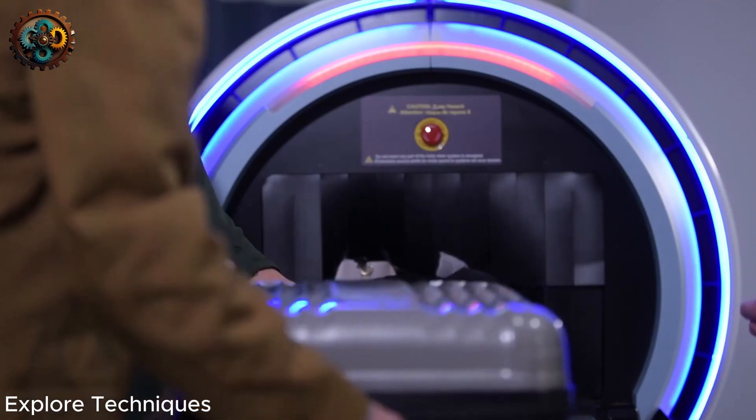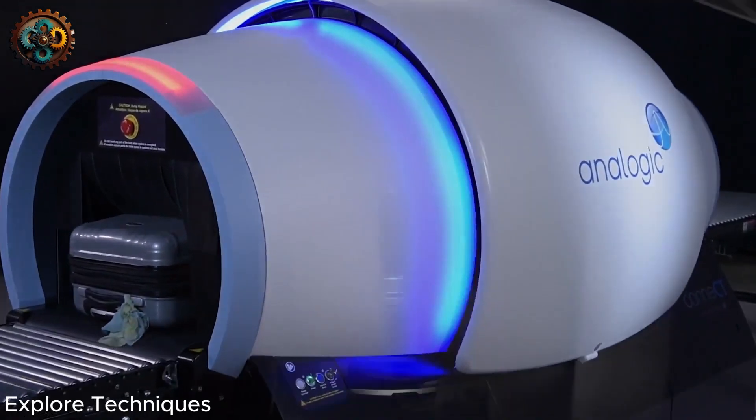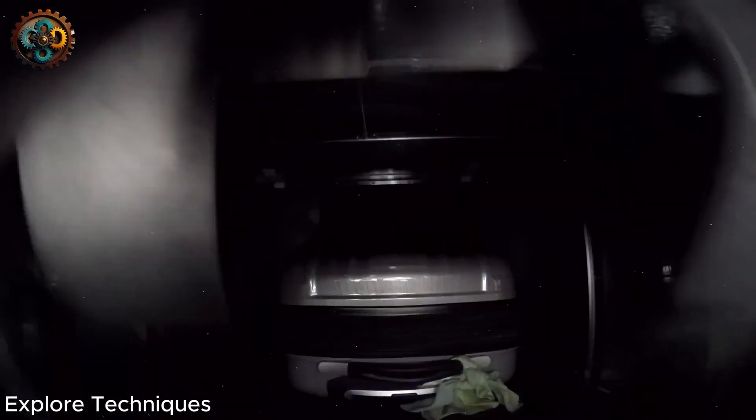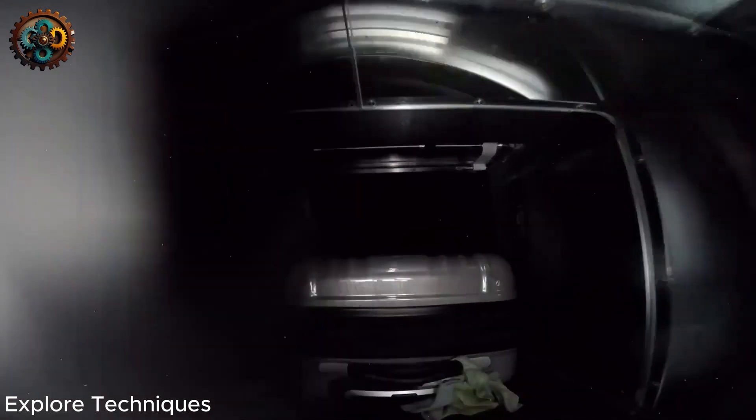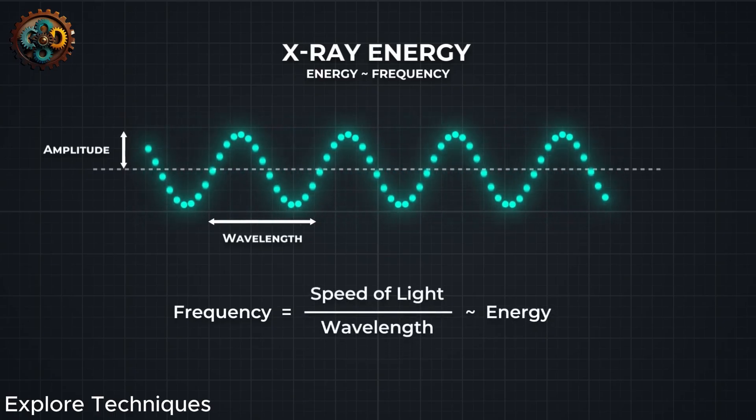To eliminate thickness as a parameter, the rotating gantry of the CT scanner can precisely measure the thickness of the material, allowing us to plug this variable into other equations.